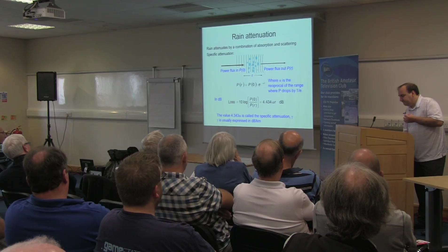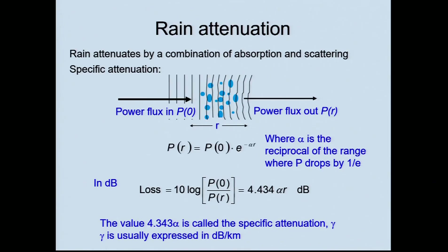Rain attenuates microwave signals. This doesn't really have any impact at VHF and UHF, but it certainly does as you move up in frequency. The attenuation — what we call specific attenuation, measured in dB per kilometre — can be calculated from theory. It depends on the number of raindrops in a particular volume of sky, how heavily it's raining, and how big the drops are relative to the wavelength.